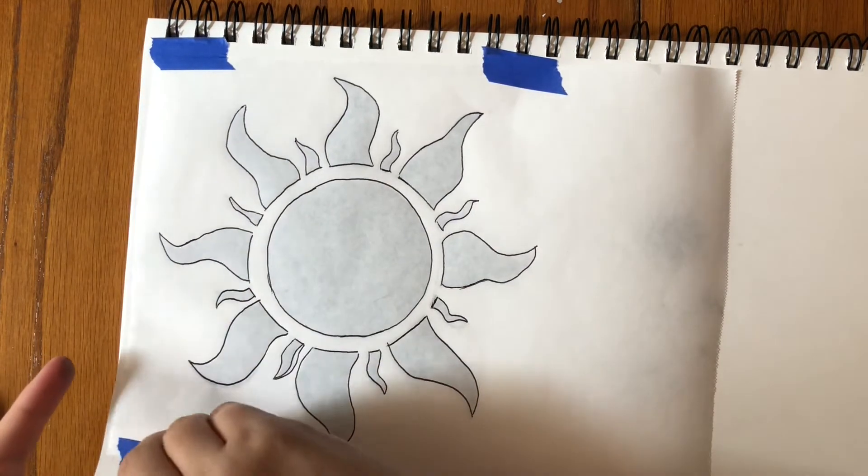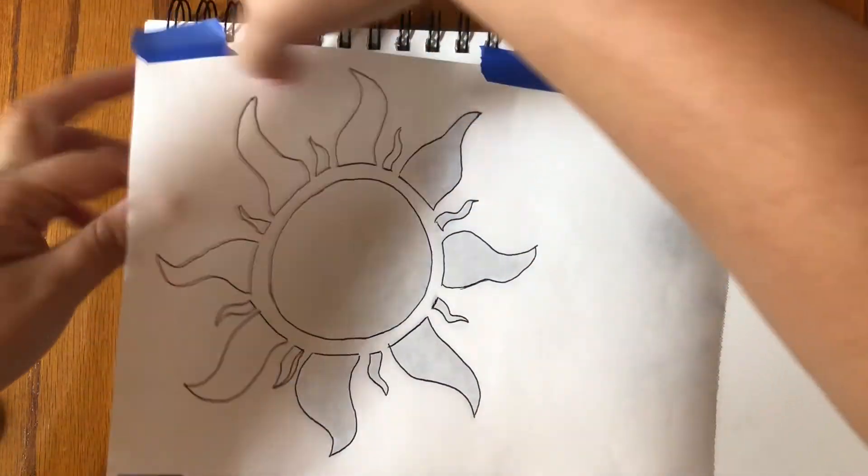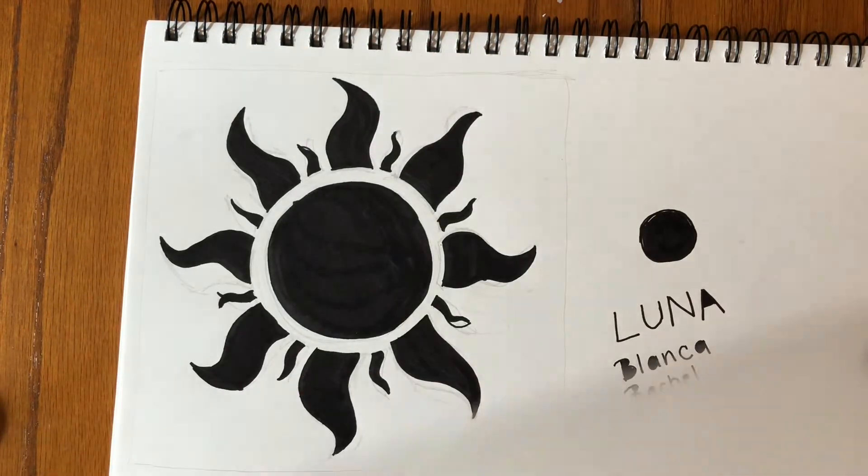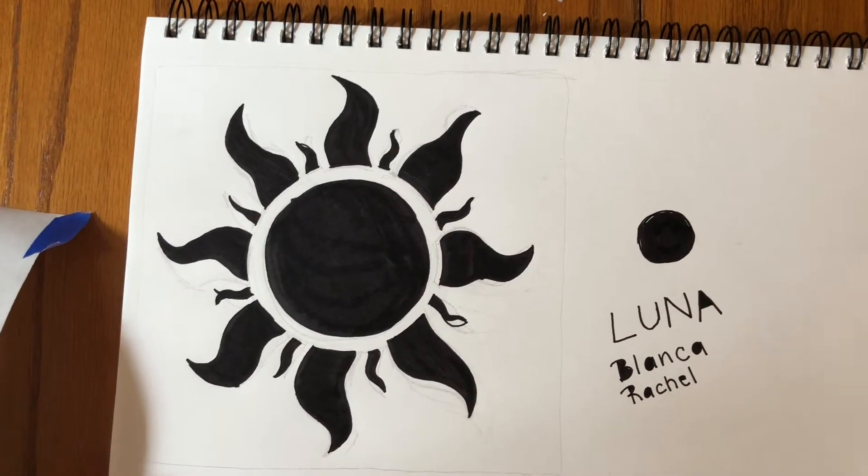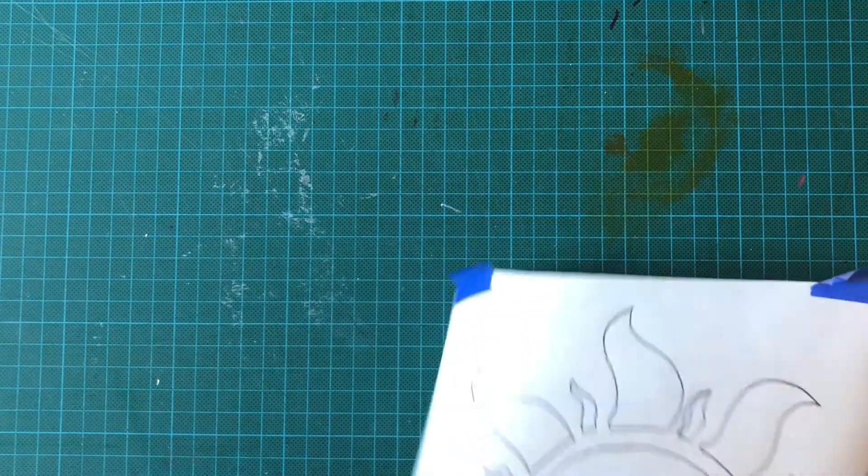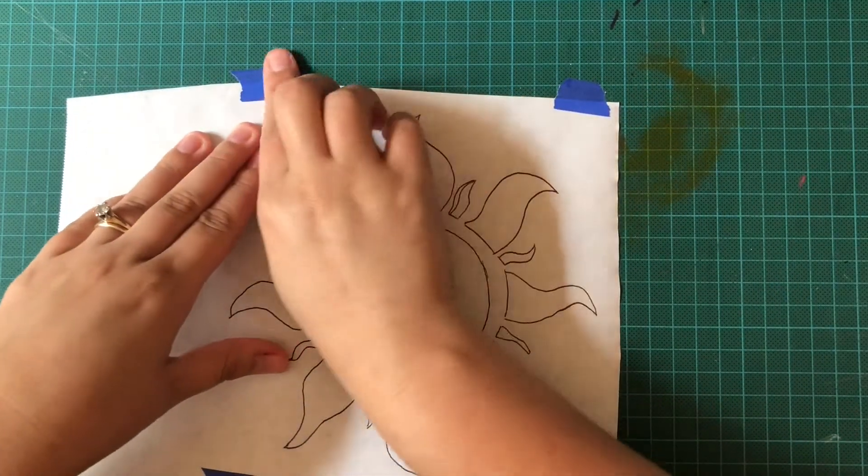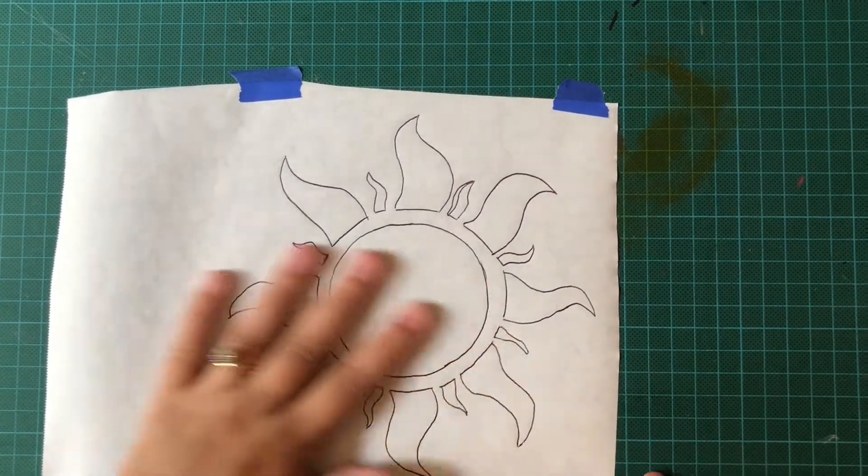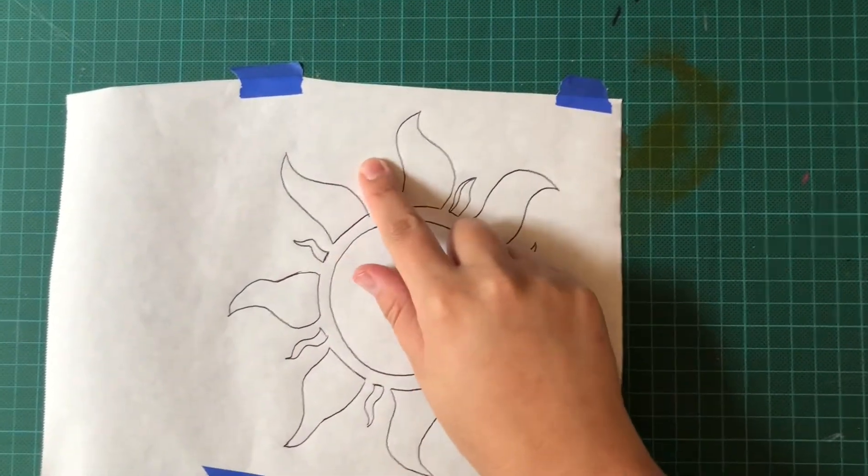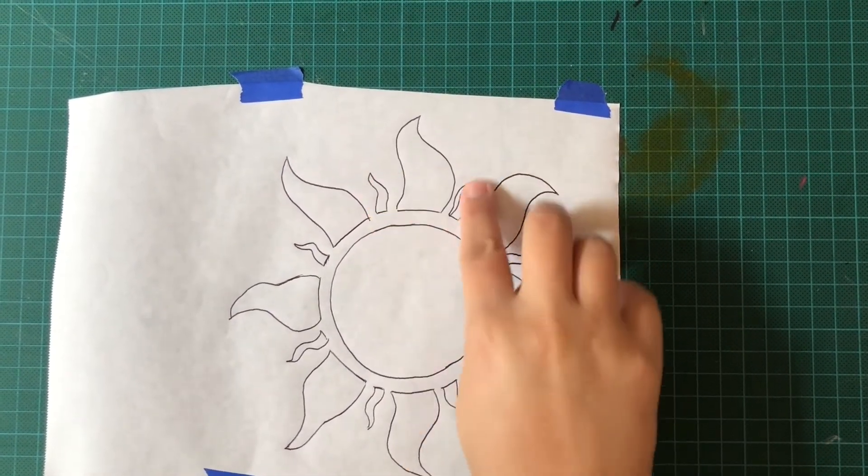Awesome, so now I'm going to peel my tape up and set our sketchbook aside for now. Now if your design is simple enough you can use scissors to cut it out. If your design has any smaller details like the inside bits of my sunbeam, we can use an exacto knife for those. I'm going to show you both in parts.